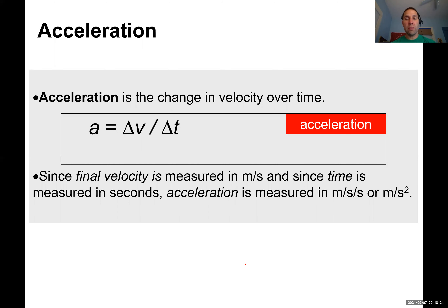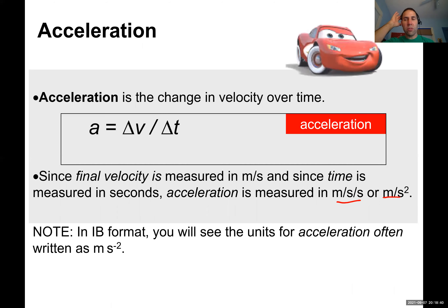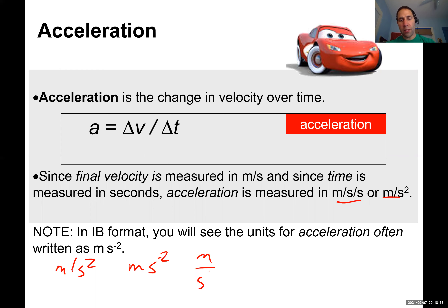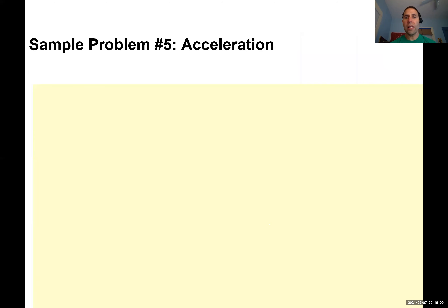Since velocity is measured in meters per second and time in seconds, the units of acceleration can be tricky. Think of it as meters per second per second, written as meters per second squared, or in IB notation as meters times seconds to the negative two (m·s⁻²). These are all equivalent — you don't need to multiply anything; it's just identifying the units.